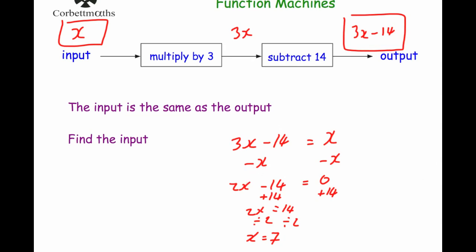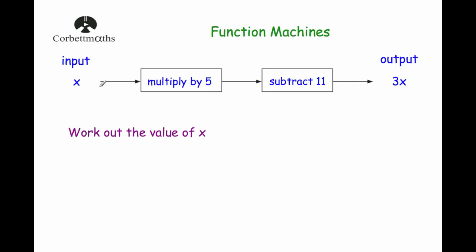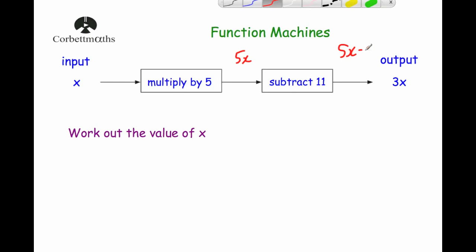Final example: input x, multiply by 5, subtract 11, output is 3x. The output is 3 times the input — so if the input is 10, the output is 30; if the input is 6, the output is 18. Working through the function machine with input x: x times 5 is 5x, then subtract 11 gives 5x minus 11. But the output is also 3x, so we set them equal: 5x minus 11 = 3x.